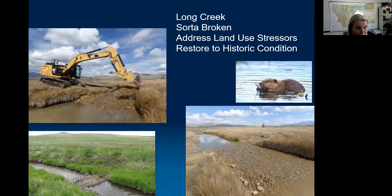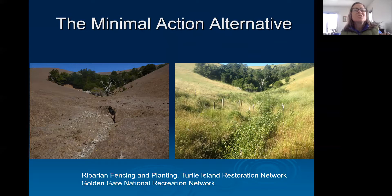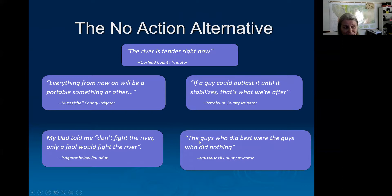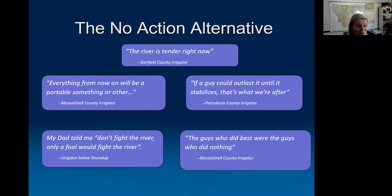The minimal action alternative — riparian planting and grazing management — needs to be considered. These were quotes from landowners on the Musselshell after the 2011 flood. They said, 'The river is tender right now — everything's going to go portable till it stabilizes.' And: 'The guys who did the best were the guys who did nothing.' One said, 'My dad told me, don't fight the river — only a fool would fight the river.' These guys were very wise.